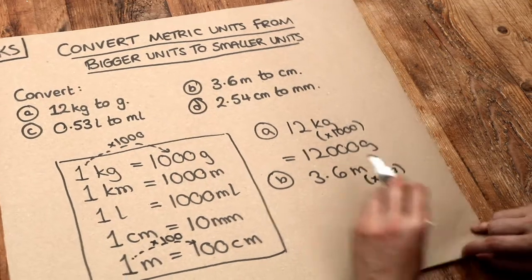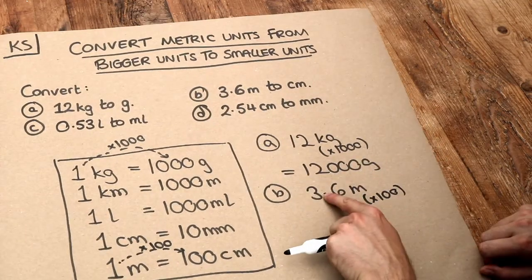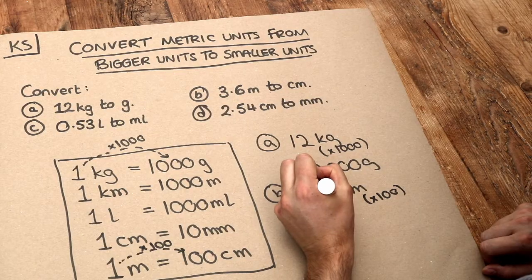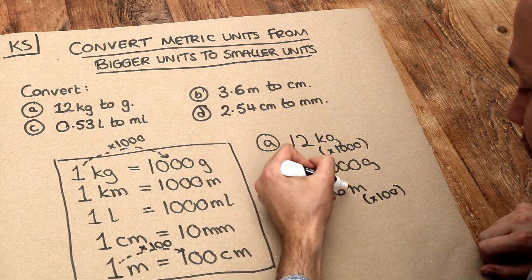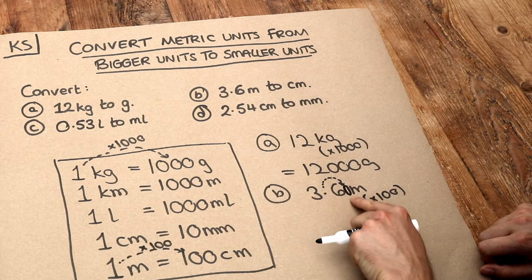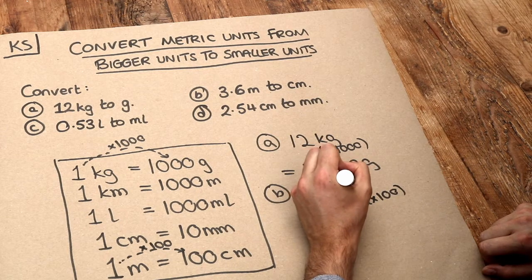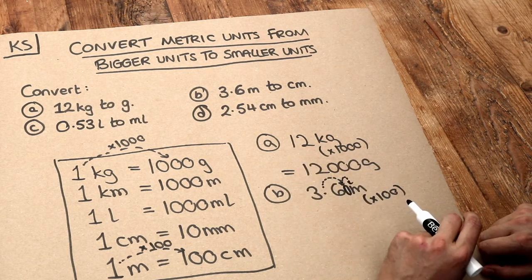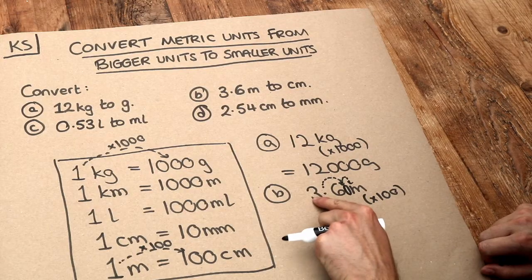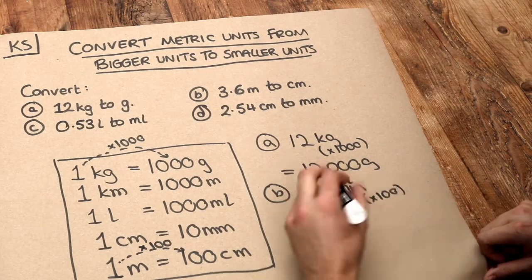Now remember, when we times by a hundred, it moves the decimal point two places to the right. So it's going to move once. And then we've run out of digits, we're just going to put a zero here after this decimal point. And then our decimal point to move twice. And that gets us to 360 centimetres.